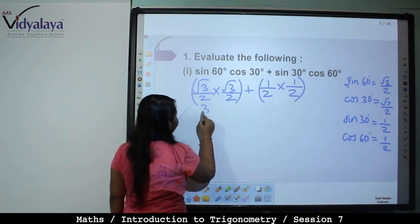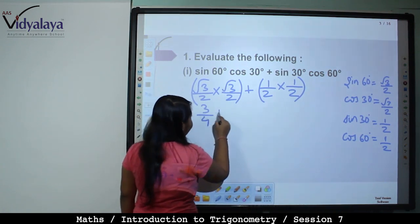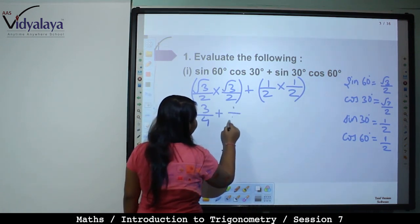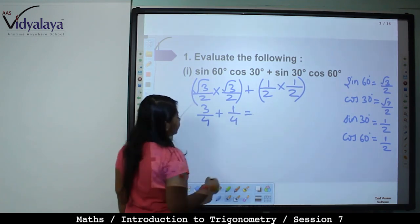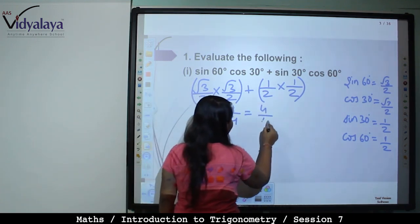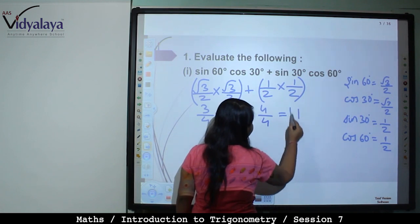This becomes 3 by 4 plus 1 by 4, which is equal to 4 by 4, which is equal to 1.